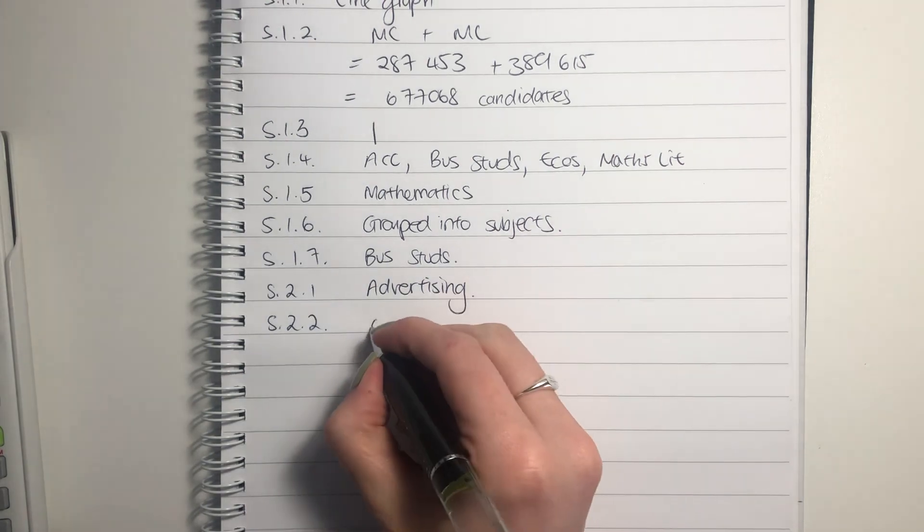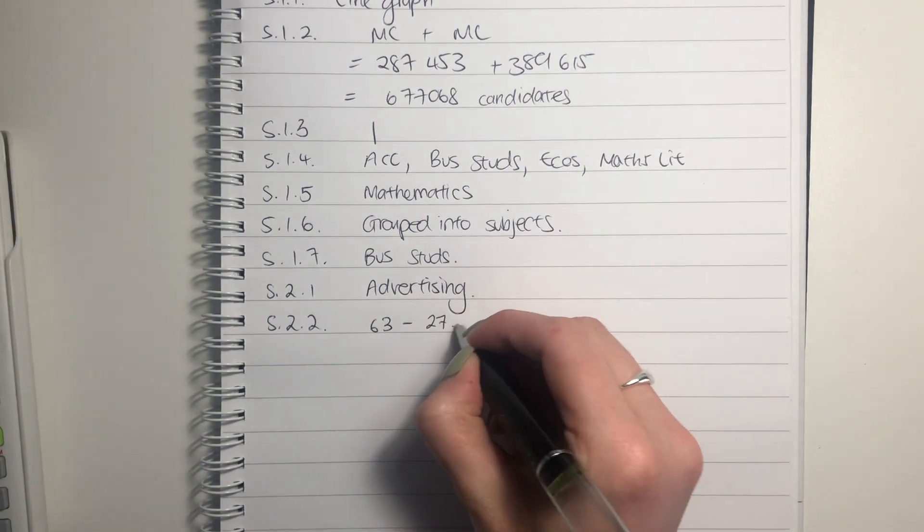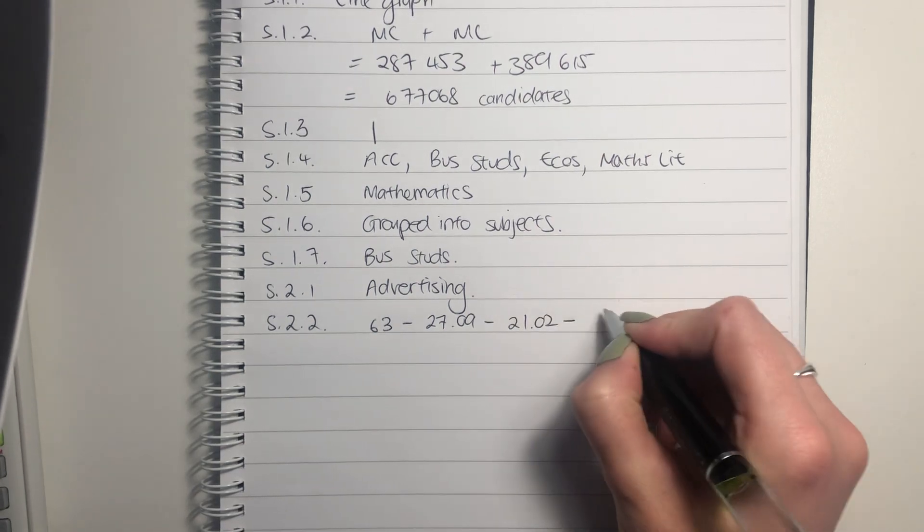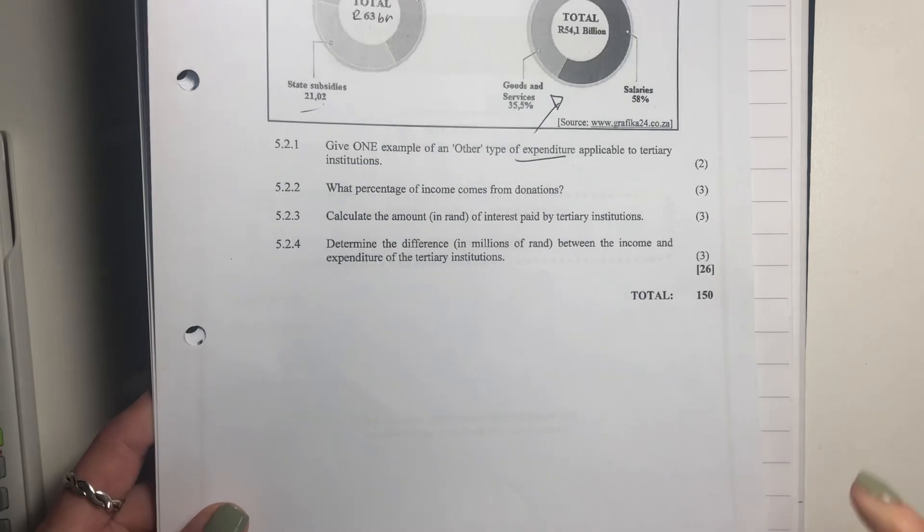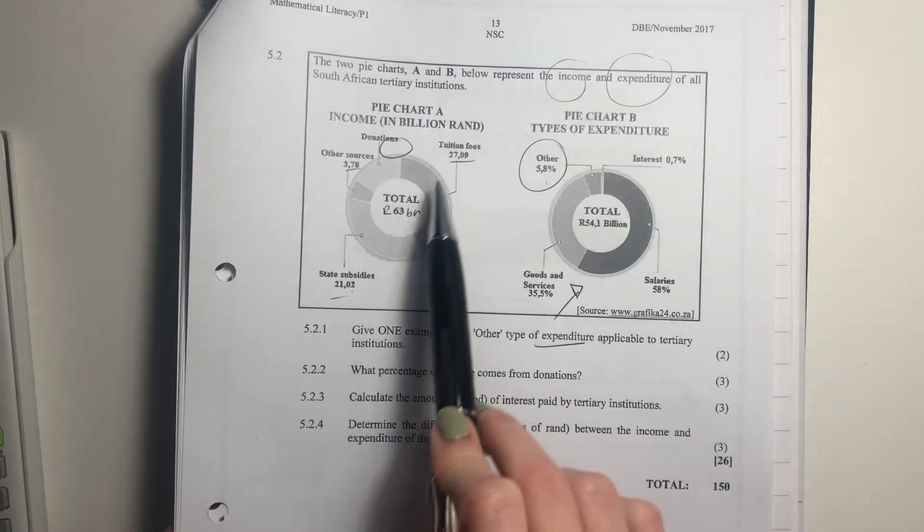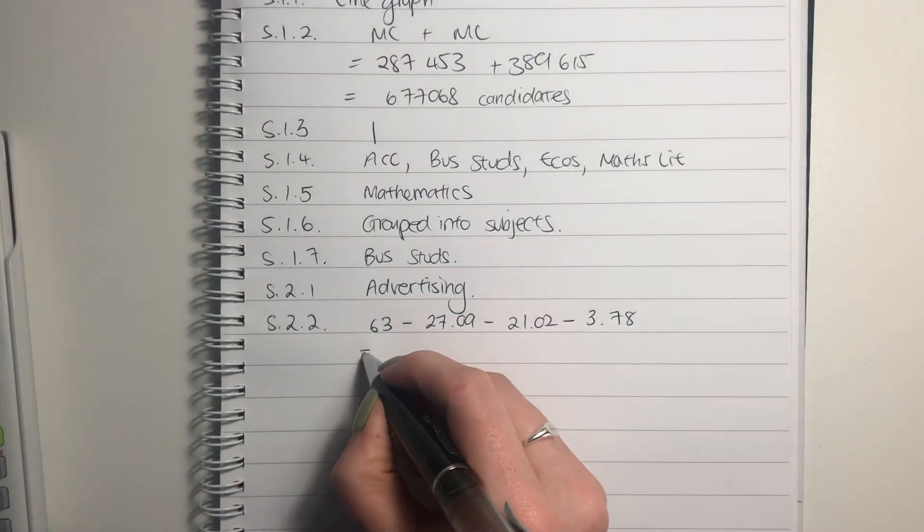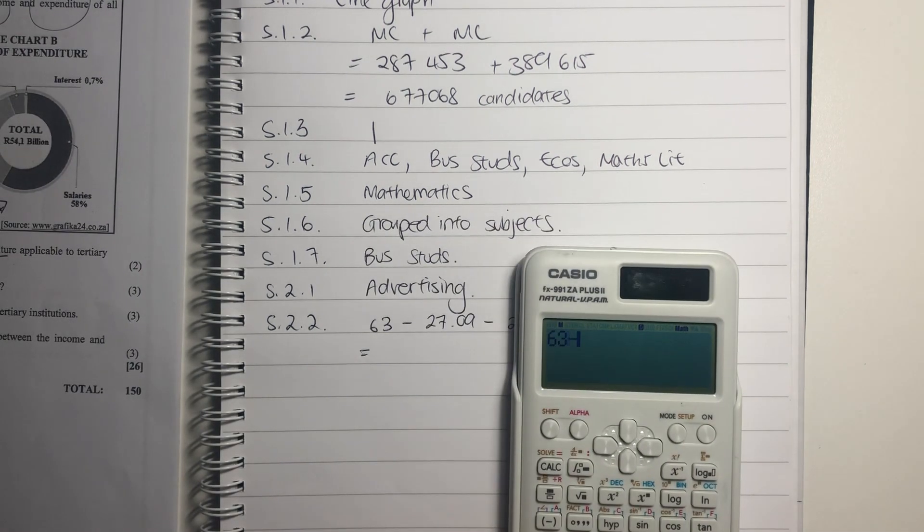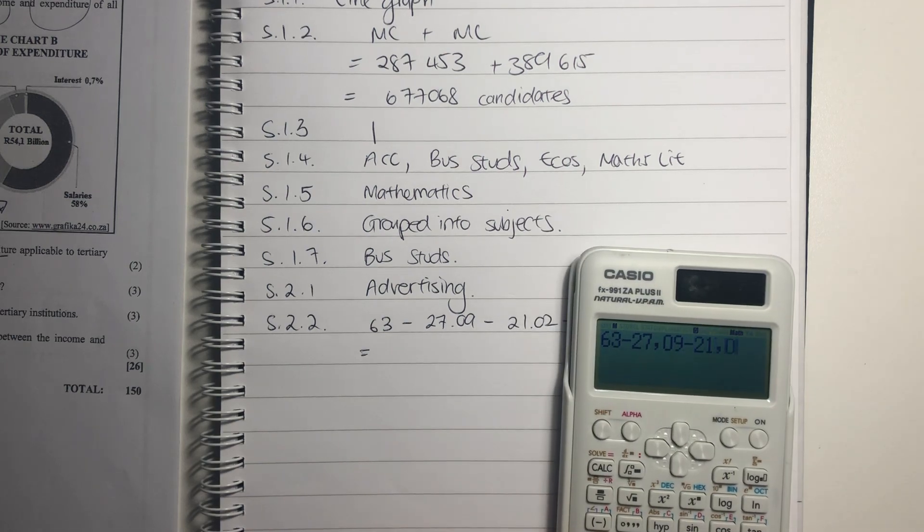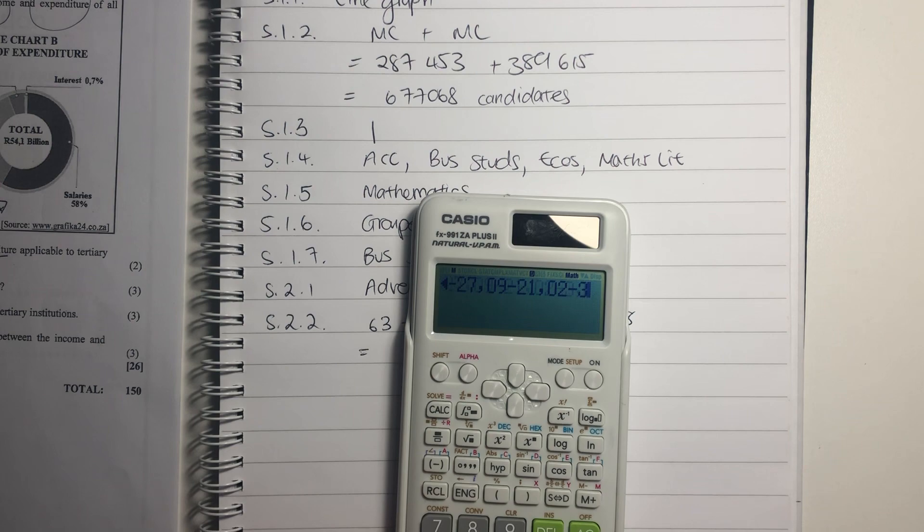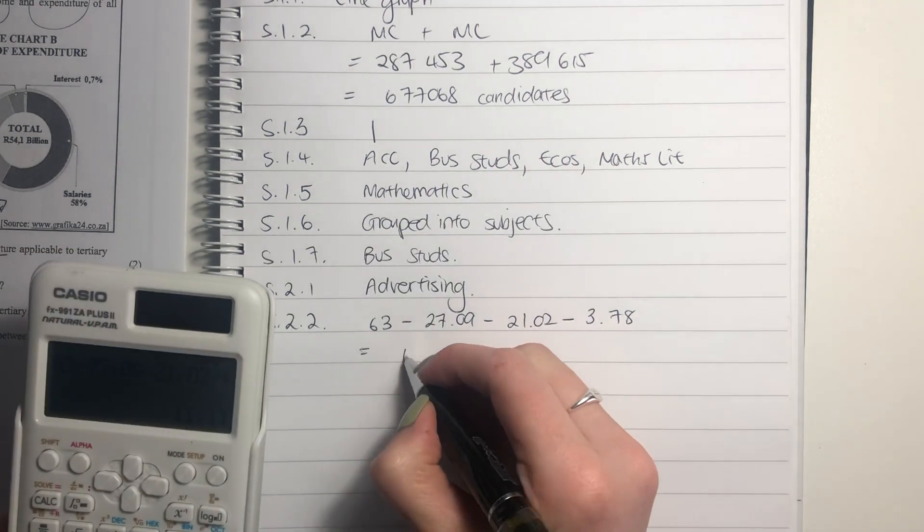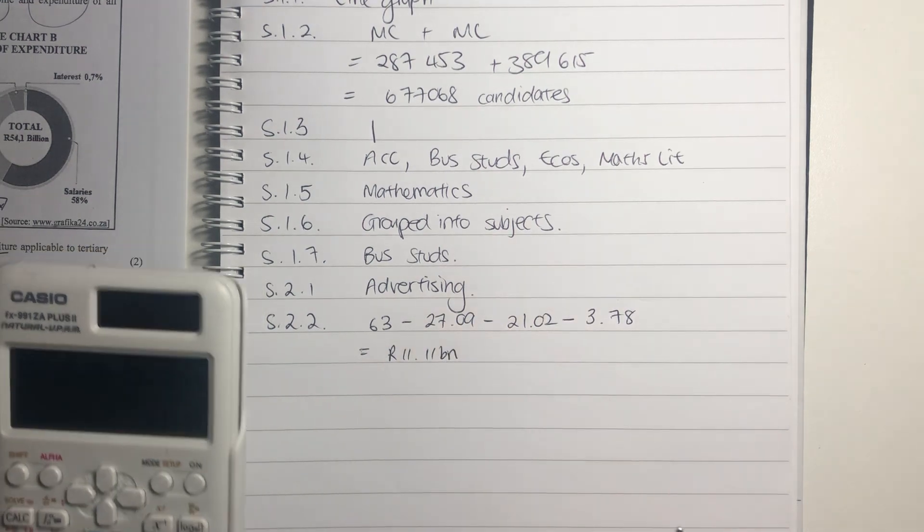Then we say whatever donations is over my total income times by 100, and that gives me my percentage. Let me show you how to do that. So I'm going to say 63 billion minus the tuition fees minus the state subsidies minus the other sources. So I've said 63 minus those three, and that is going to be my donations. A lot of these institutions do get fair amounts of donations.